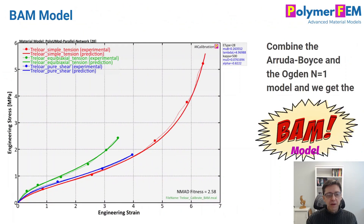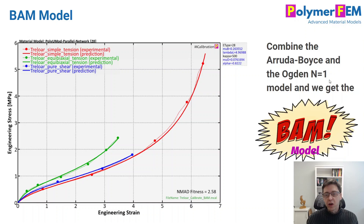We add the first-order Ogden model, we make alpha negative, and then we calibrate such a model. If I do that, I get the predictions shown here. This is my new model: Arruda-Boyce plus Ogden n=1. It's a brand new model — I'm calling it the BAM model because BAM, look at the results. It looks really good. The error is 2.58%.